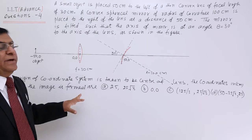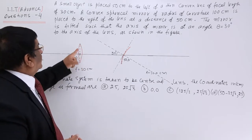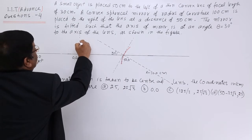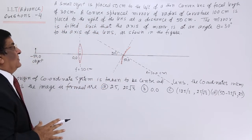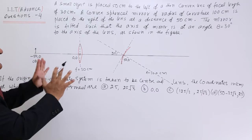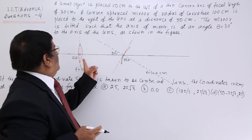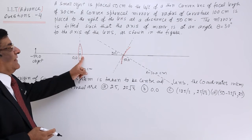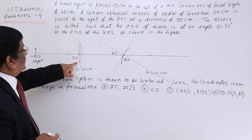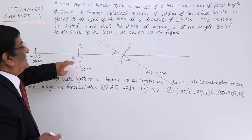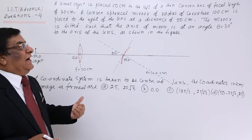We have to find out where the image is formed and determine its coordinates on this coordinate system — x-axis and y-axis with origin at 0,0. This problem involves two phenomena: first, refraction by the lens, and then reflection by the mirror. We will first find where the image is formed due to refraction by the lens.